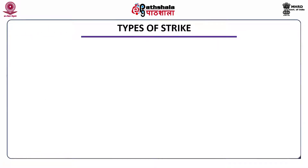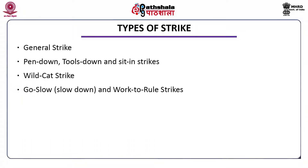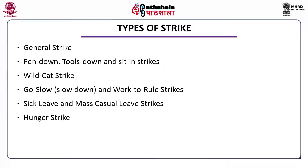Talking about the types of strike, there are seven types. The first is general strike. The second is pen-down, tool-down, and sit-in strikes. The third is wildcat strike. The fourth is go-slow, slow-down, and work-to-rule strike. Then there are sick leave and mass casual leave strikes, hunger strike, and lastly, sympathy strike.